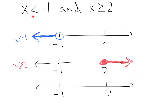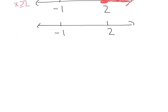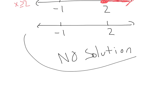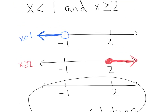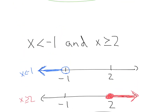Here we have x is less than negative 1, and x is greater than or equal to 2. I've graphed x is less than negative 1 with an open dot, and x is greater than or equal to 2 with a closed dot. Our final answer must include everything they have in common — because it's an and. But they have nothing in common: less than negative 1 doesn't overlap with greater than or equal to 2. So our final answer is no solution, because there's no number that is both less than negative 1 and greater than 2.